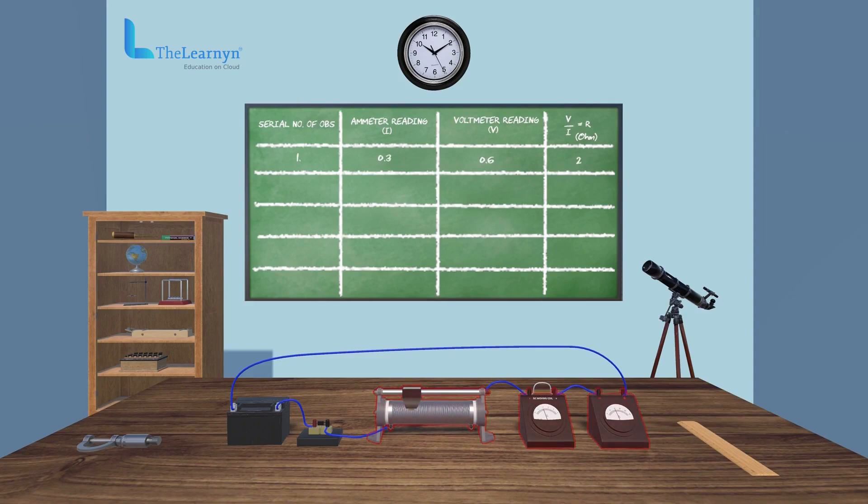Let's shift the rheostat contact slowly and record the reading of voltmeter and ammeter and calculate the value of R in each case. We can record multiple readings by slowly shifting the rheostat contact. Let's gather a range of data for our analysis.